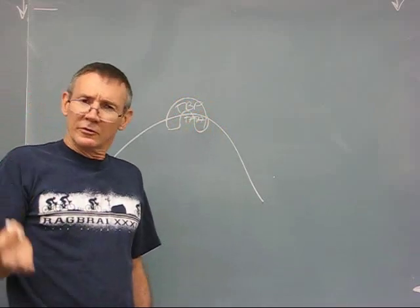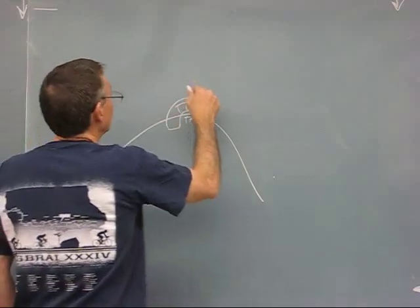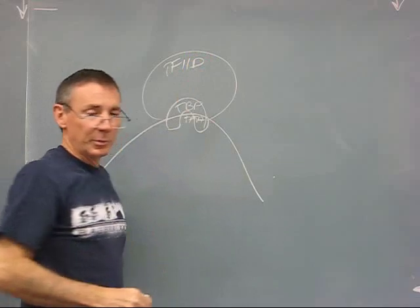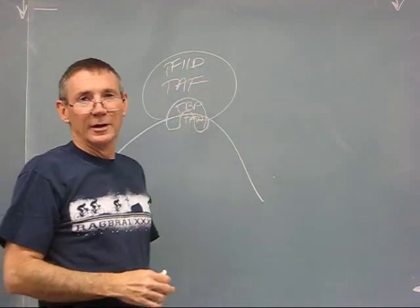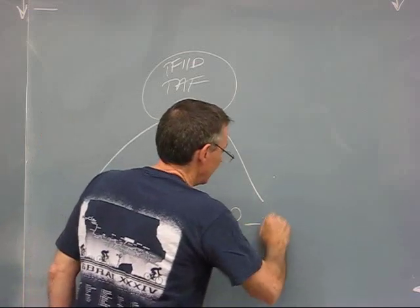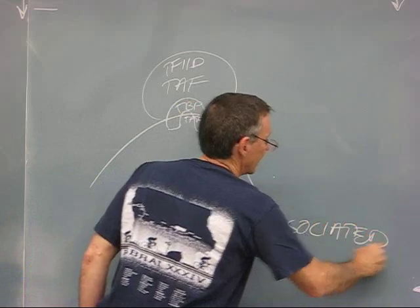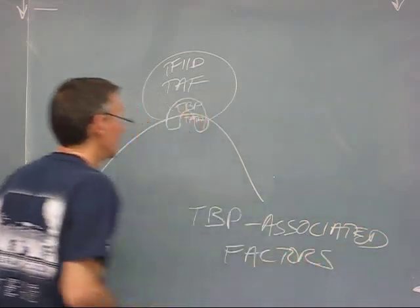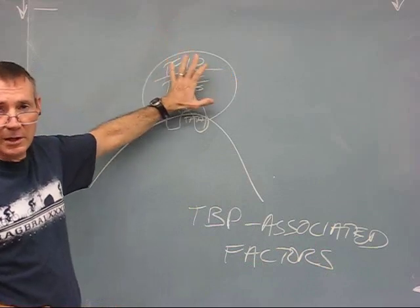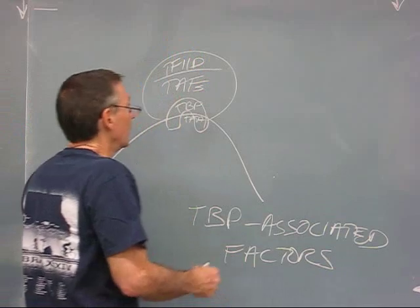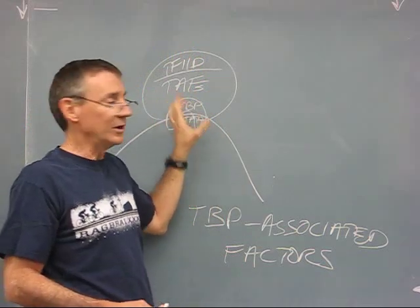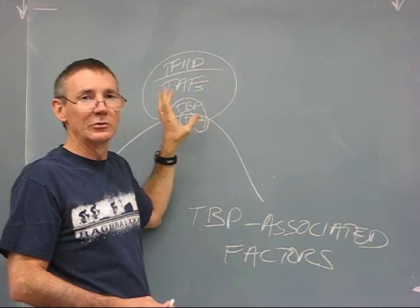Next thing that binds, sometimes referred to as TF2D. TF2D is actually a complex made up of a large number of proteins. Each of these proteins is referred to as a TAF, which is an unfortunate item being an acronym. TAFs are TBP associated factors. So TF2D is composed of TAFs. These proteins bind to TBP, and this is the beginning of the basal pre-initiation complex. We refer to these factors, TBP and TF2D, and various other transcription factors in this immediate area, as the general transcription factors or the basal transcription factors.